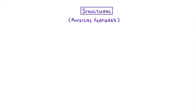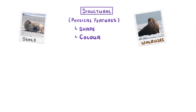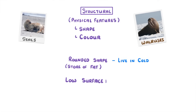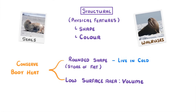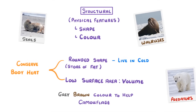Structural adaptations are the physical features we see, like the organism's shape or colour. So if you think of seals and walruses, the reason they're this rounded shape is because they live in cold environments, so they need a good store of fat and a low surface area to volume ratio, which both help them to conserve their body heat. And they have this grey-brown colour to help camouflage them from predators.